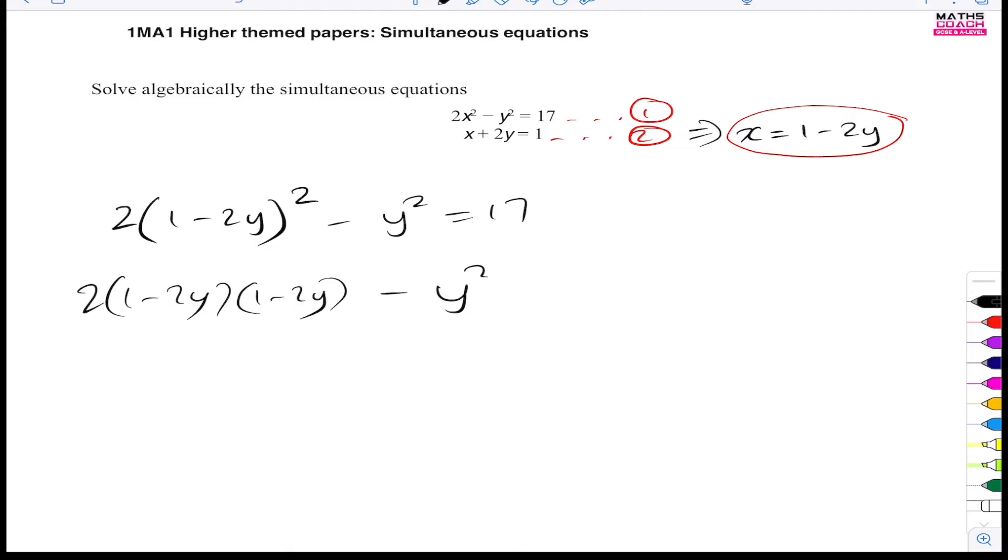And then the minus y squared equals 17. Now you can either expand these two brackets or you can expand this first. It's totally up to you. Let's go ahead and expand that first. So that would be 2 minus 4y. And that has to go in a bracket. So that's another error that students make.